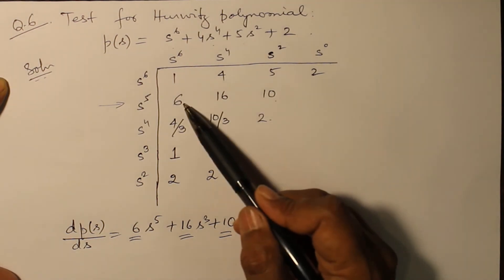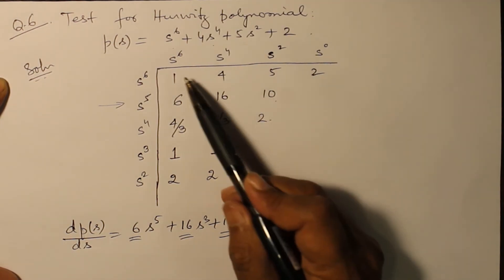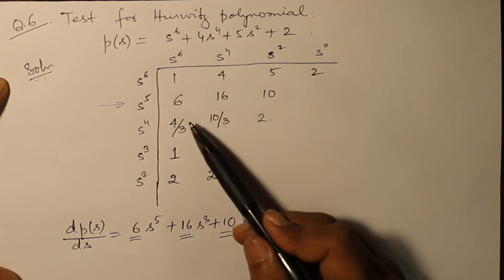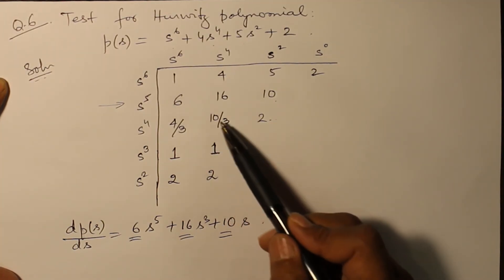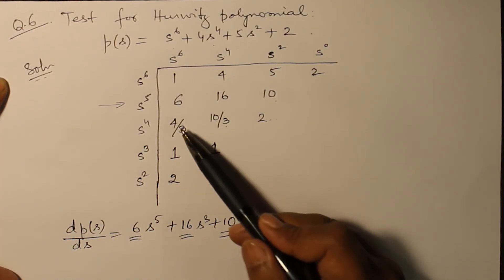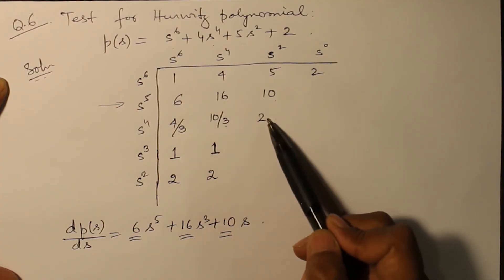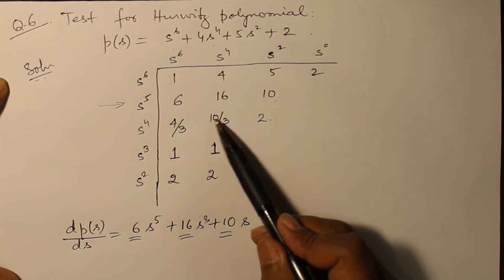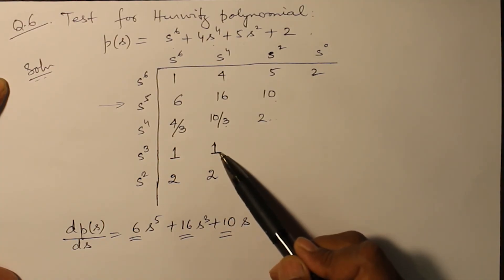6 into 4, 24 minus 16, that is 8 divided by 6, gives you 4 by 3. 30 minus 10, 20 divided by 6, gives you 10 by 3. And 6 into 2 minus 1 into 0 divided by 6 gives you 2. Similarly, 4 by 3 into 16 minus 6 into 10 by 3. Now 10 by 3 minus 4 by 3, that is 6 by 3, that is 2. 2 minus 0 divided by 1, that is 2.